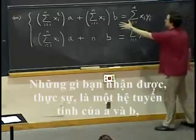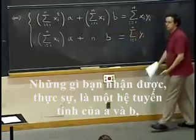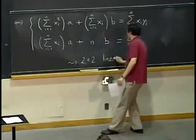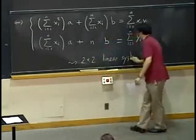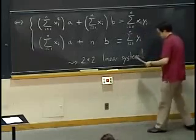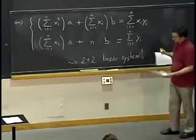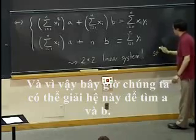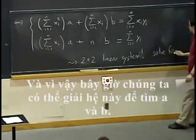So what you get, actually, is a linear system in a and b, a two-by-two linear system. And so now we can solve this for a and b.